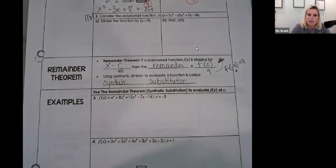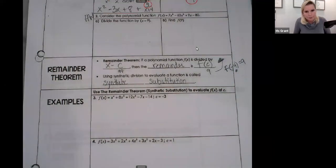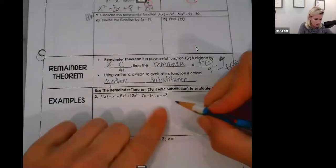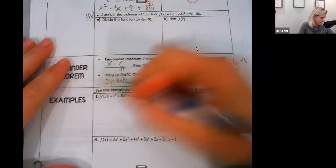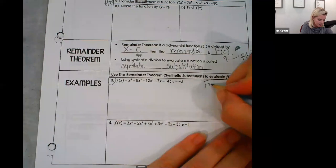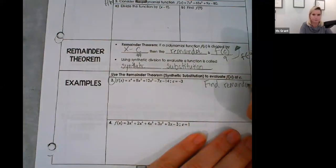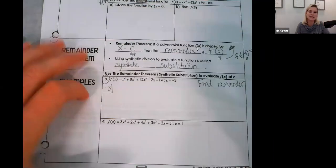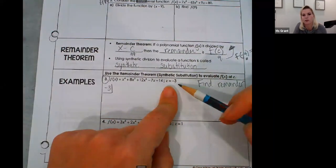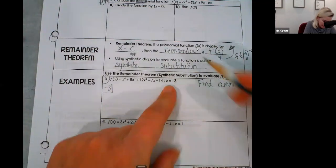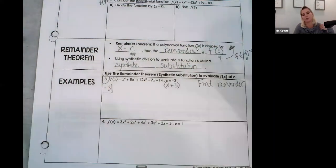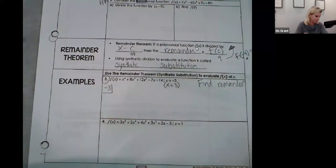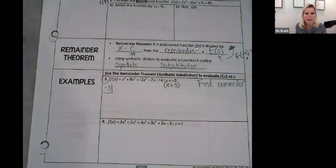Now I'm going to practice using synthetic division with a given factor of negative three — I'm going to do number three and find the remainder. Since negative three is given as the zero — meaning x plus three equals zero, giving negative three — I'll use negative three for synthetic division. My coefficients are one, eight, 12, negative seven, negative 14.